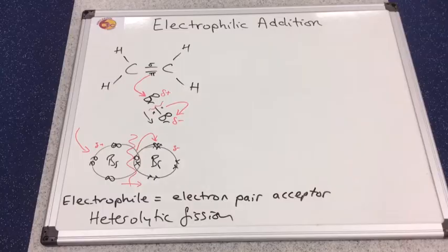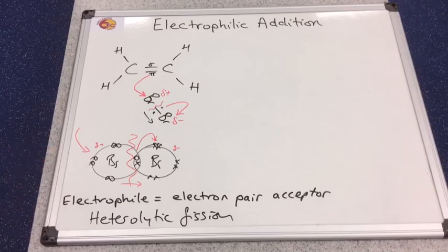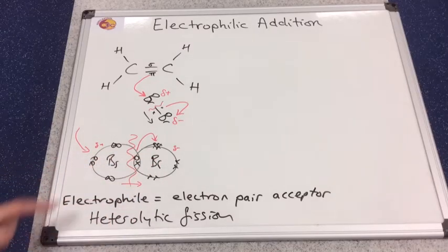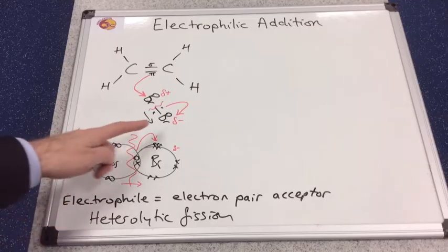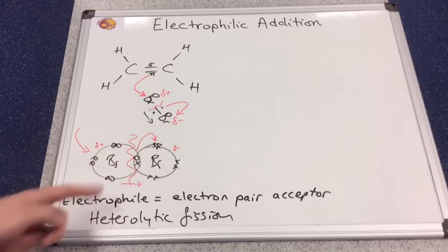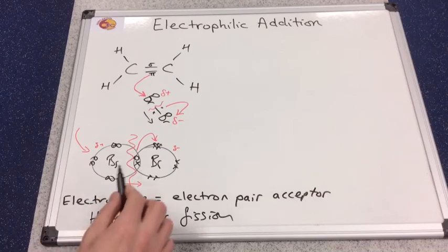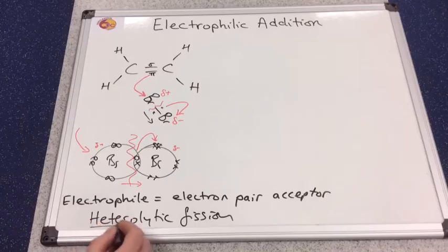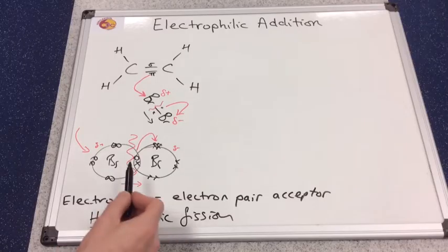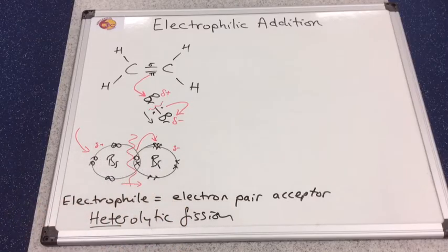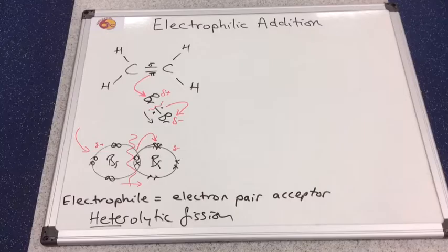Remember in the radical substitution mechanism, when you had alkanes reacting with halogens, we had homolytic fission, and that was because each halogen atom in the molecule received one electron each. That's because the UV split the bond down the middle. In this case, the bond is split unevenly. That's where the hetero comes from, different. This bromine receives two electrons from the bond, and this bromine doesn't get any from the bond. Heterolytic fission.